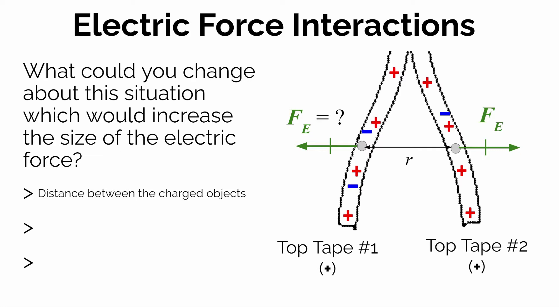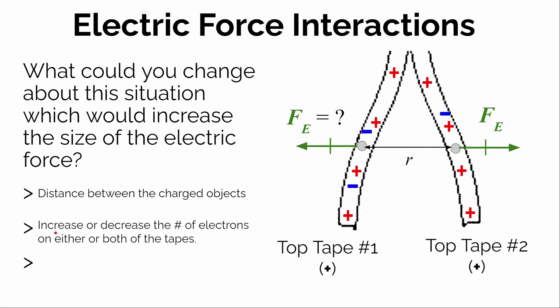What else? If we kept the distance the same, what else could we change about this situation to also increase the electric force? The fact that both pieces of tape have a net positive charge is the reason they're repelling one another. If we could make them more positively charged, maybe they'd repel even more. If we took more electrons off of either tape, that would make it more positively charged, probably increasing the electrostatic force. So we could either increase or decrease the number of electrons — that would change the amount of charge.